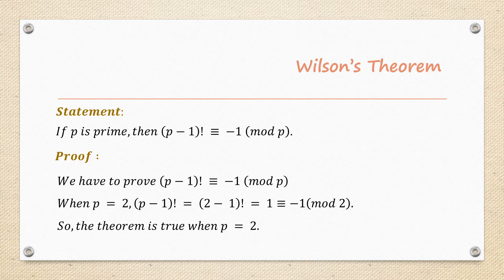Are these two values equal? Yes. By congruence technique, we can bring -1 to the left-hand side: 1 + 1 = 2, and 2 divided by 2 gives remainder 0. Alternatively, -1 + 2 = 1, so LHS equals RHS. Therefore the theorem is true for P = 2.